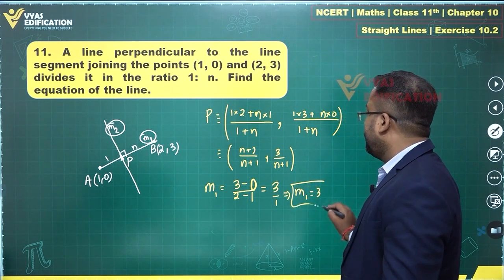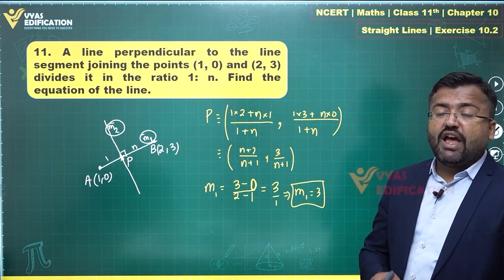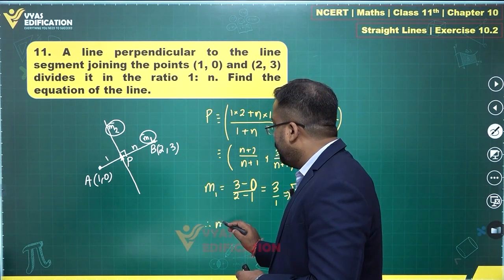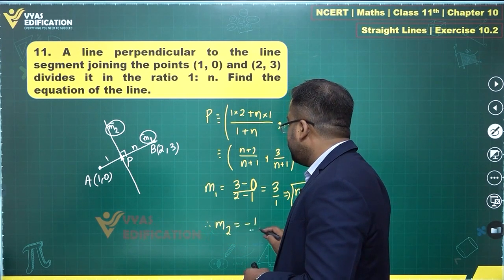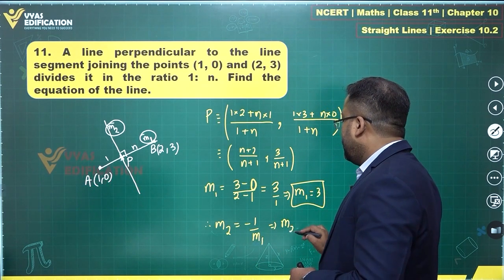If you have found m1 easily, can you find m2 as well? m2 is the slope of perpendicular line, so therefore m2 is equal to negative reciprocal of this. This tells me m2 is equal to minus 1 by 3.